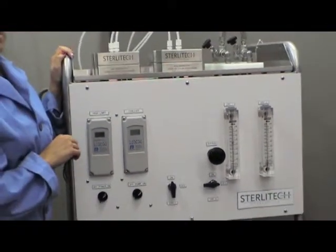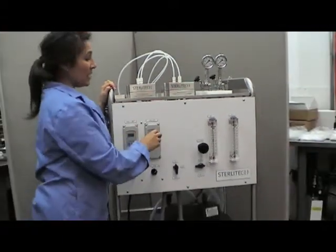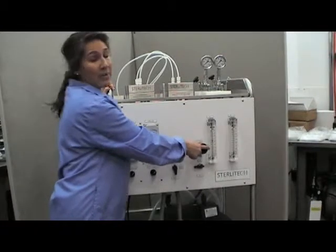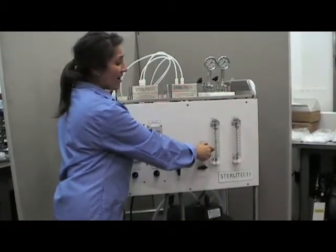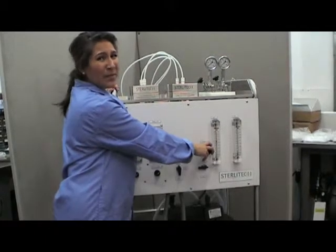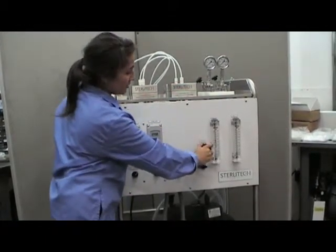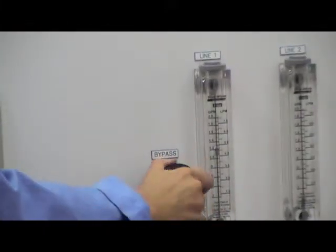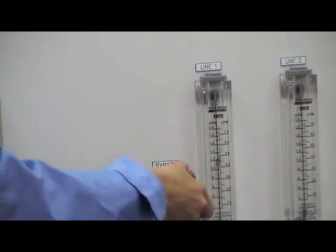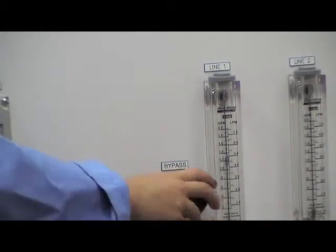To start setting the system to 300 psi you'll need to slowly begin closing the bypass valve by turning the knob to the right. We currently have the system fully open so it may take a couple turns before you achieve this and see the flow begin to increase. It won't happen immediately so be patient.